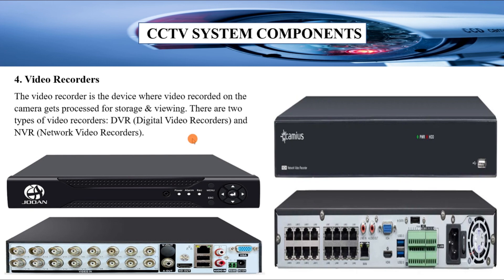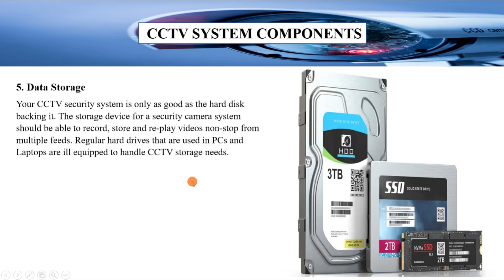Number four is video recorders. The video recorder is a device where video recorded on the camera gets processed for storage and viewing. There are two types of video recorders: a DVR, which stands for Digital Video Recorder, and an NVR, which stands for Network Video Recorder. Here is an example of a DVR and an example of an NVR.